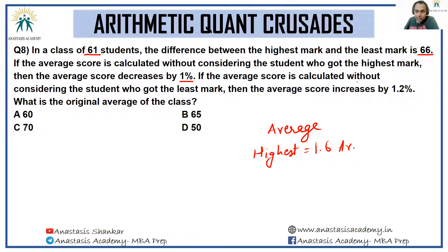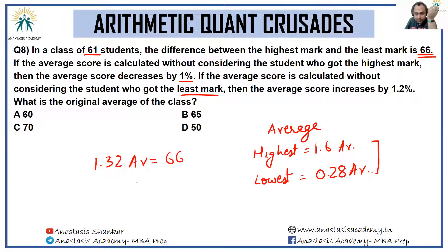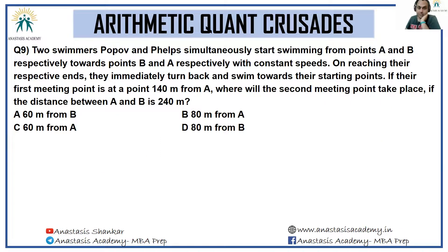If the average is calculated without the student with the least mark, the average increases by 1.2%. A 1.2% surplus over 60 students means the lowest student scored 72% below average, i.e., 0.28 times the average. The difference between highest (1.6×avg) and lowest (0.28×avg) is 1.32×avg = 66, so average = 50. Answer is option D. This question focuses purely on deviations.